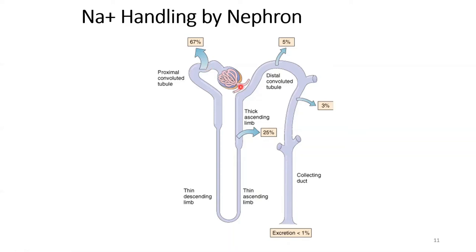The 67% at the PCT and 25% at the thick ascending limb is fixed — this happens no matter what, assuming a constant GFR and normal flow velocity. The variability comes at 5% in the DCT and 3% at the collecting duct. This variability is because reabsorption in this region is affected by aldosterone, the sodium reabsorption hormone released by the adrenal gland, whose main stimulus is angiotensin 2.